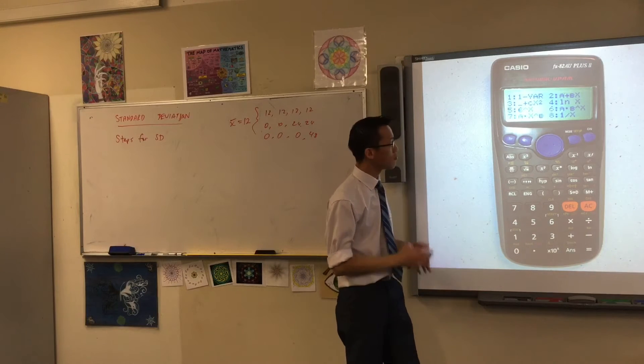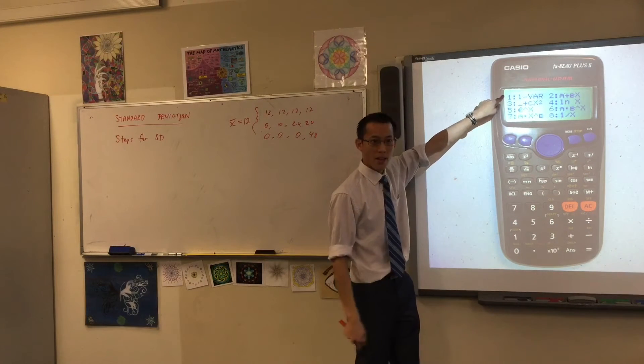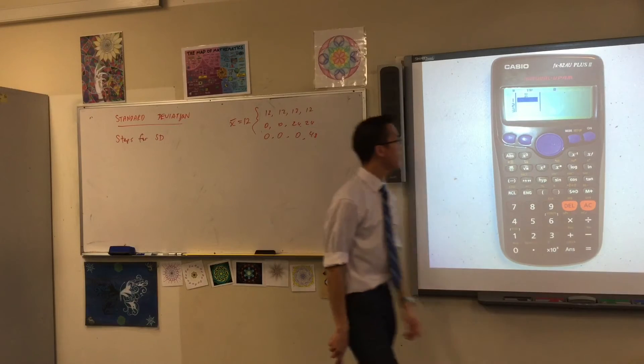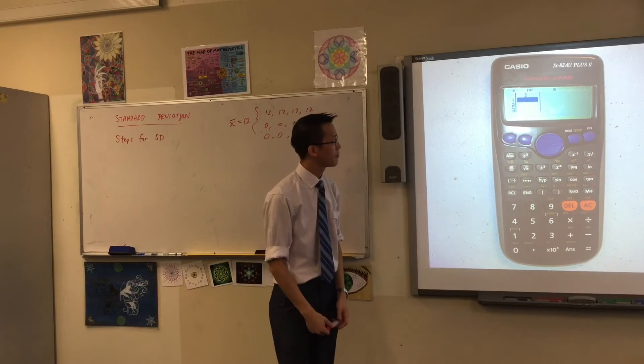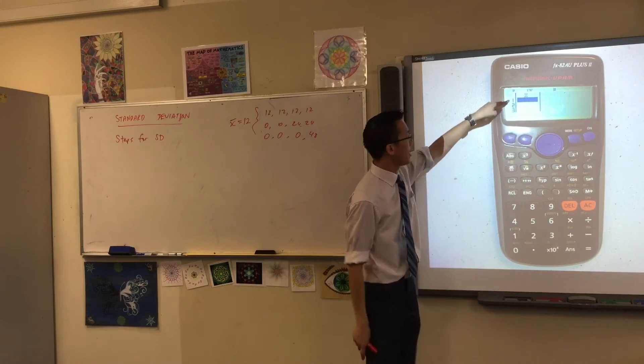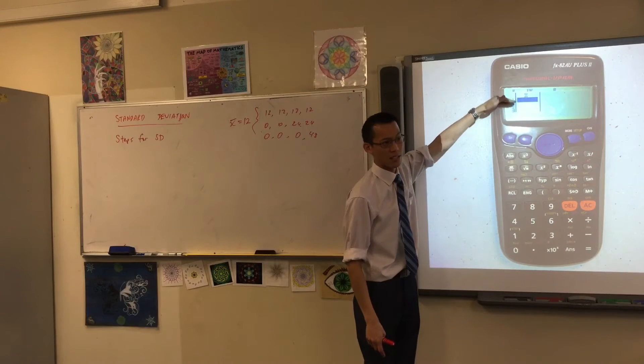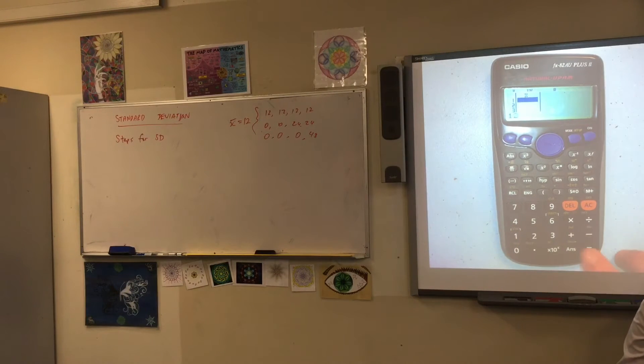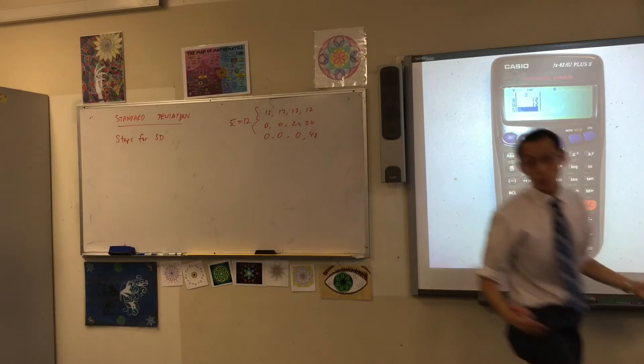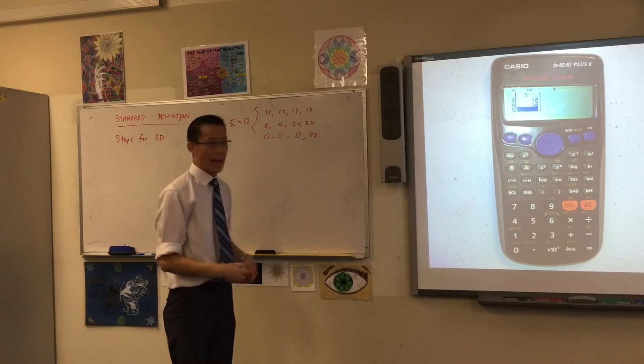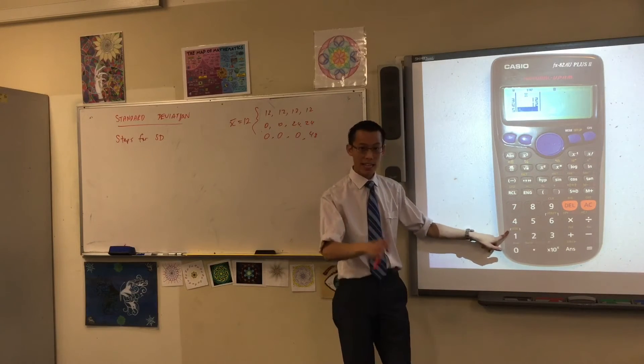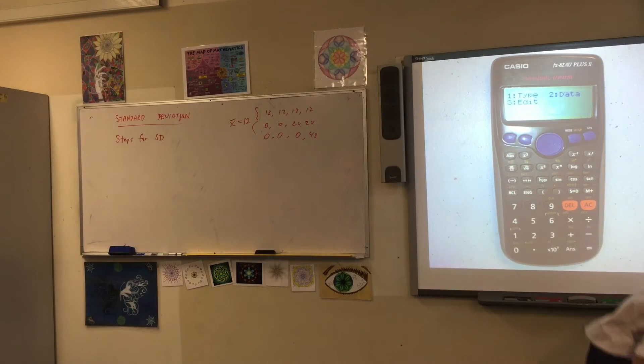You've got a whole bunch of options. The only one we're really going to be interested in is this first one. One var stands for one variable. So we'll have a look at that, we'll press one, and then this is what happens on my screen. What this is telling you is, this is counting the number of scores you put in, and x is what's the score. For instance, I could say 12, and then if I hit equals, that's my first score, and then I can go 12 again, and 12 again, and 12 again. Now I have four scores and they're all 12.